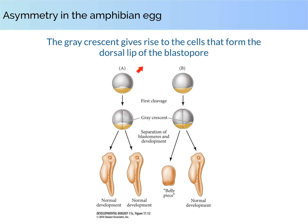The dorsal lip of the blastopore is essential for the formation of the notochord, which induces the formation of the nervous system. It is also needed for the formation of the head endoderm and the head mesoderm.